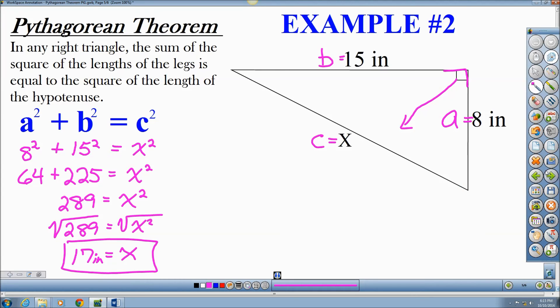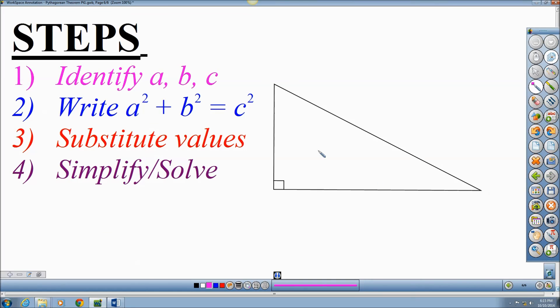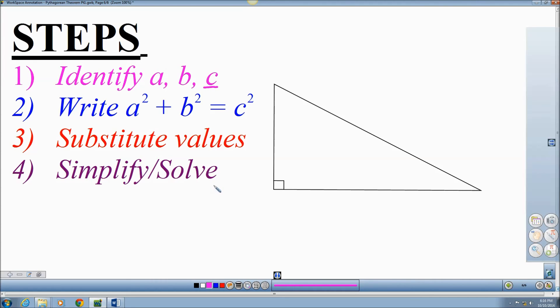Now, to reiterate this, let me go over the steps. The first thing I always do is identify sides A, B, and C. Knowing that side C is the hypotenuse. Then I write out my Pythagorean theorem. A squared plus B squared equals C squared. I substitute in the given values. And then I simplify or solve.